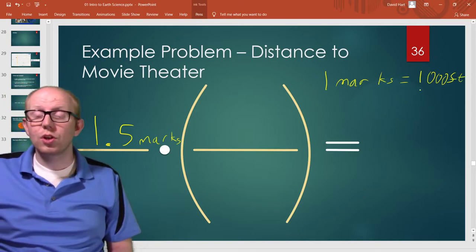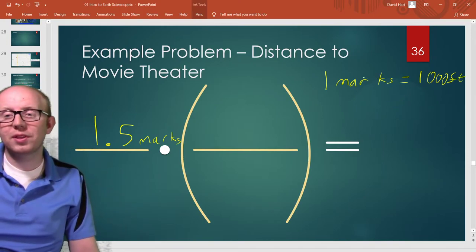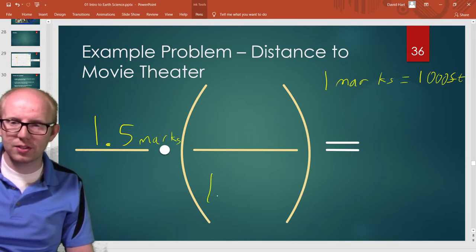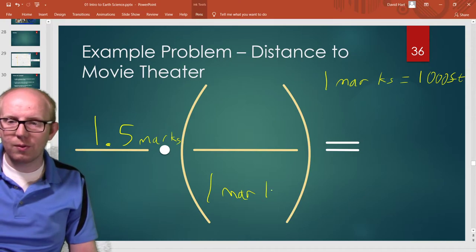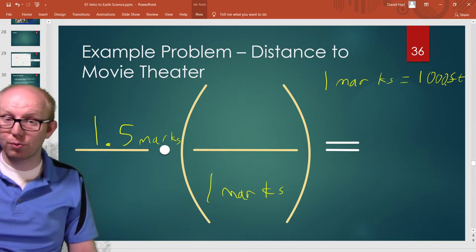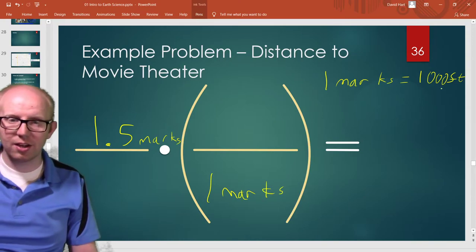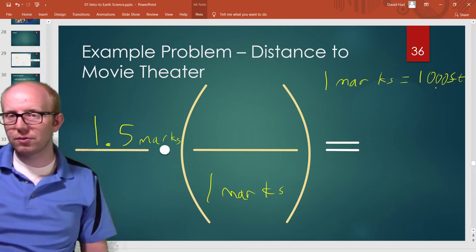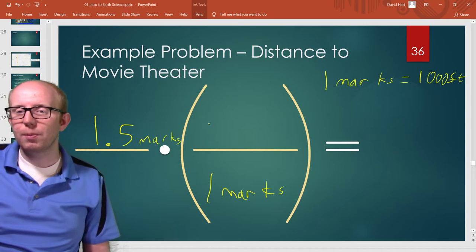So if we want to know how far that is we want to put the thing we currently have that we want to get rid of on the bottom of this, and we want to put the thing we're trying to get to - the real life value or maybe the scale value - we're trying to get to feet, the real actual distance, we put that on the top.